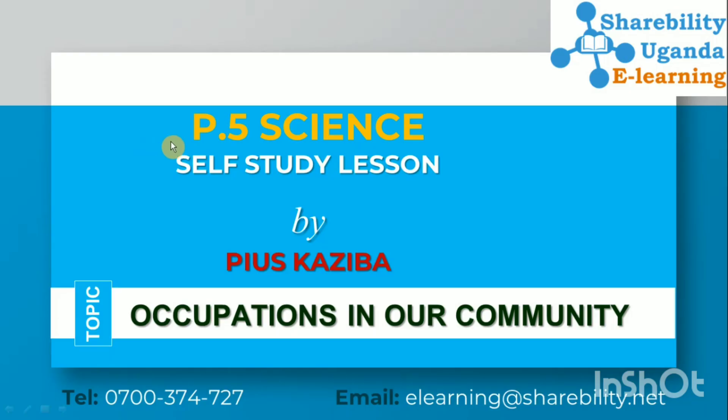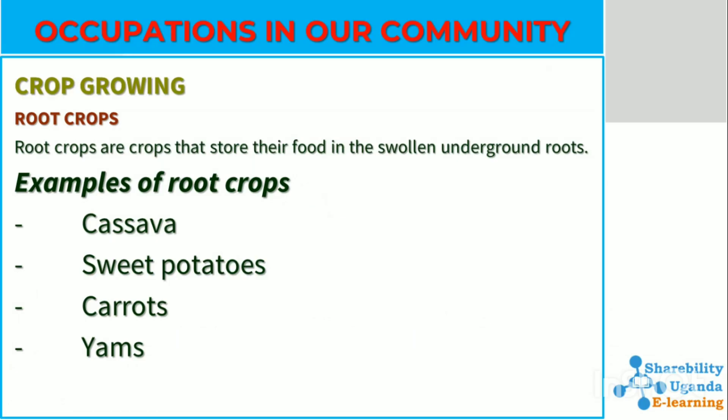We have several occupations and among them we can have crop growing. There are different types of crops grown in our communities, and one of them are root crops. Root crops are crops that store food in their swollen underground roots. Examples of root crops include cassava, sweet potatoes, carrots, and yams, among others.